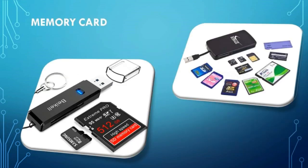A memory card is used to store various types of electronic data. It is also referred to as flash memory card. It is capable of storing a wide range of data files such as audio and video clips, images and text documents. Memory card is used in computers, cell phones and in digital cameras. A card reader is essentially required for the memory card to be connected to the computer. It is available with different memory capacities like 2 GB, 4 GB, 8 GB, 16 GB etc. and also comes in different sizes.